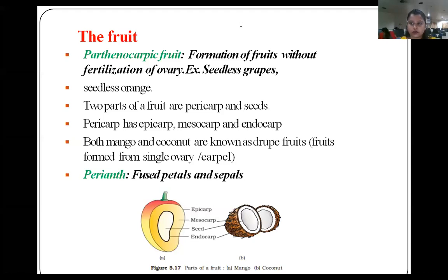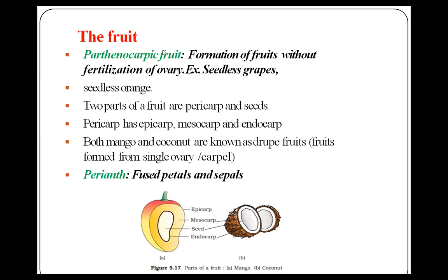We start with the topic of fruit. The first concept is parthenocarpic fruit — the formation of fruits without fertilization of the ovary. The fertilization process means the fusion of male and female gametes; in parthenocarpic fruits, these gametes do not fuse, yet the fruit is still formed. This is an important definition regularly asked in exams.